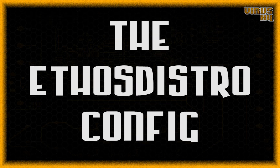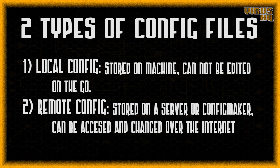For the second part of this video — the ethos distro configuration file — this is the file that runs Ethereum OS. There are two types of configuration files: local and remote. The remote one is the default, but you can change it to local. With a local config, the file is stored on the machine itself, so to change it you need physical or remote access to that machine. The remote config is stored in a text file on a server or the config maker provided by ethos distro, and it can be accessed and changed over the internet.